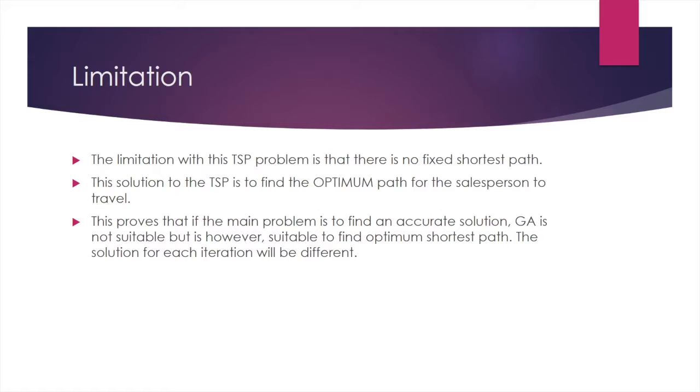Even though the genetic algorithm has so much advantage in TSP, there are still some limitations. The most important problem is that we can't find the exact shortest path by genetic algorithm. Therefore, in most occasions, the path calculated by genetic algorithm is just the optimum enough path for a person to travel, not the best path. This proves that if the main problem is to find the accurate solution, GA is not suitable, but is however suitable to find the optimum shortest path.